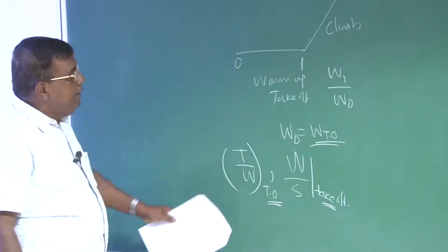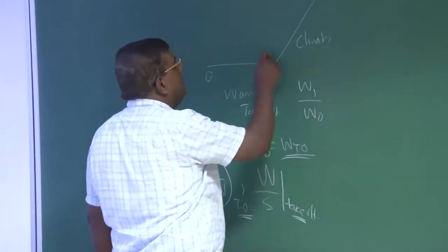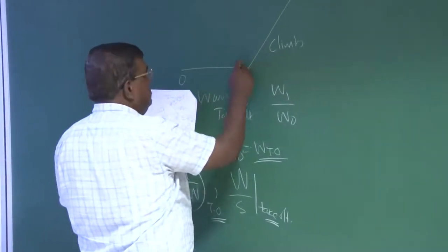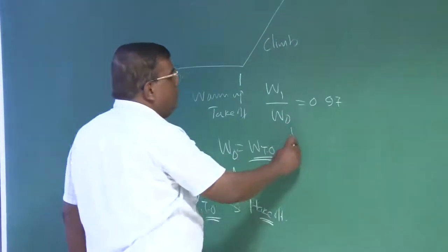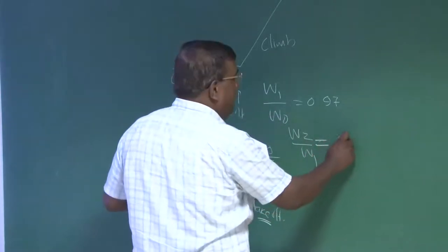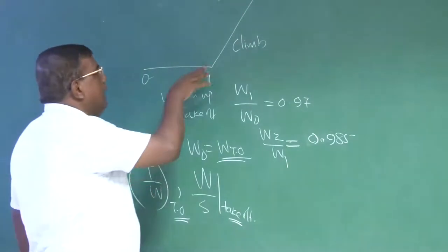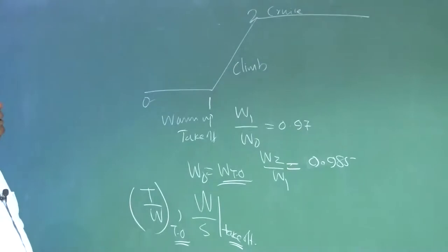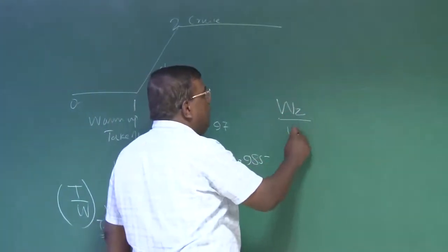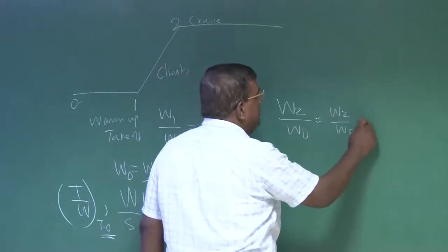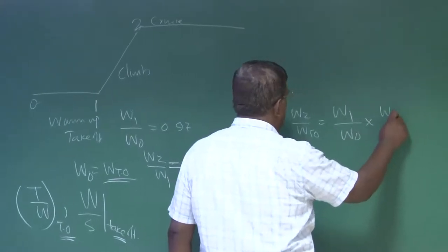Why is this important? If I give you a simple example with W by S takeoff — W naught is W takeoff. W1 by W naught, this value could be, let us say, 0.97. That means some fuel has been consumed in this segment. And then W2 by W1, which is climb — let us say that ratio is 0.985. Because to climb up, this ratio W2 by W1 is less than 1, because some fuel is consumed. But if I want to know what is W2 by W naught, which is equal to W2 by W takeoff, that will be W1 by W naught multiplied by W2 by W1.